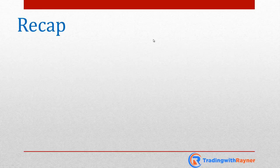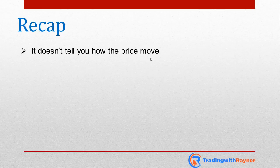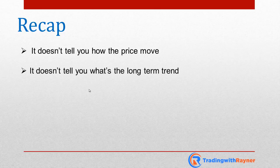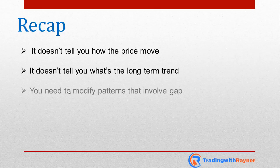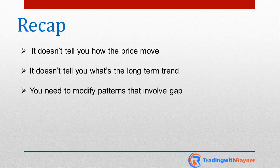Let's do a quick recap of the limitations of candlestick patterns. Number one: it doesn't tell you how the price moves — it just tells you that it closed higher or lower, but you don't know how the price moved within that period. Number two: it doesn't tell you the long-term trend. A bullish hammer within a downtrend is not a bullish sign, so be careful about trading patterns in isolation without considering the long-term trend. And last but not least, you need to modify patterns that involve a gap, especially if you're trading 24-hour markets like Forex or some futures markets — remove the gap element so you can apply these patterns properly. With that, I have come to the end of this video and I'll see you in the next.